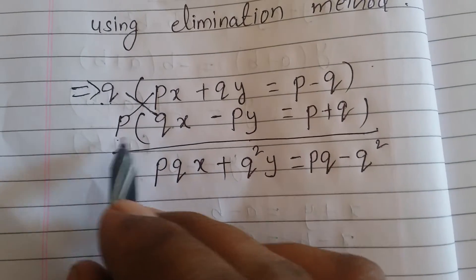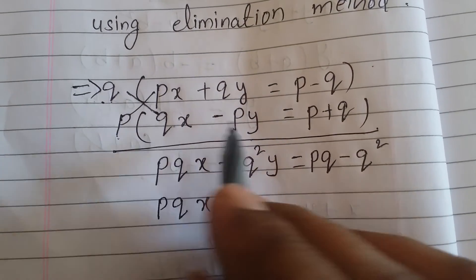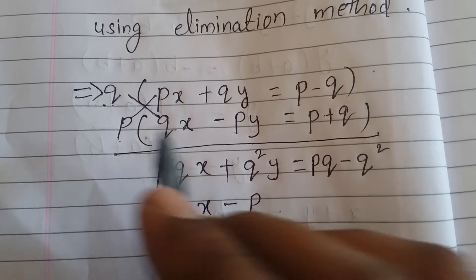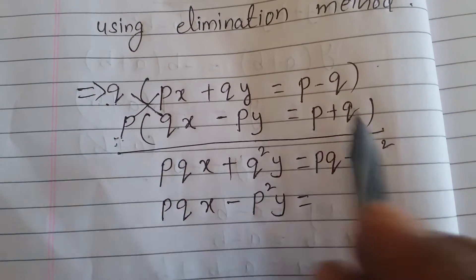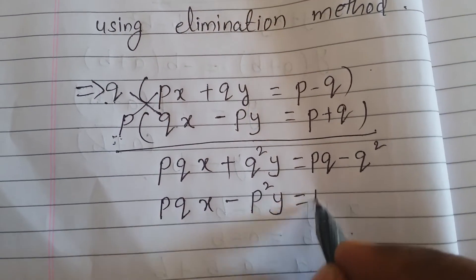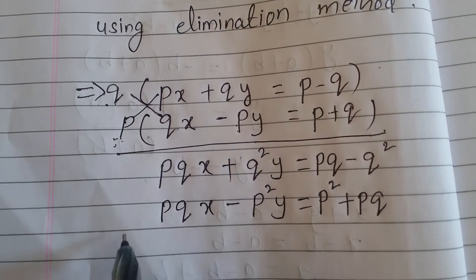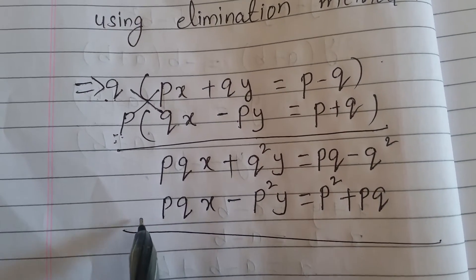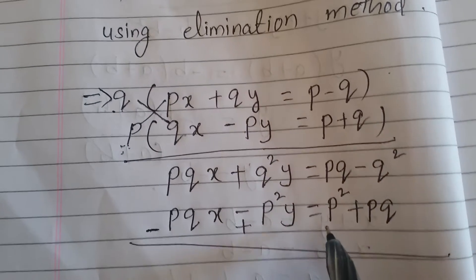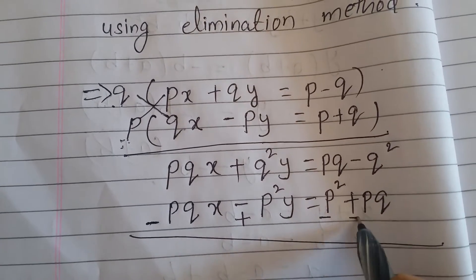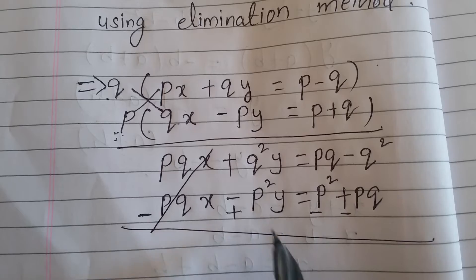Now subtracting: pq·x plus q²·y minus pq·x minus (negative p²·y). We change the signs — plus becomes minus, minus becomes plus. The pq·x terms cancel out, and pq minus pq cancels as well.